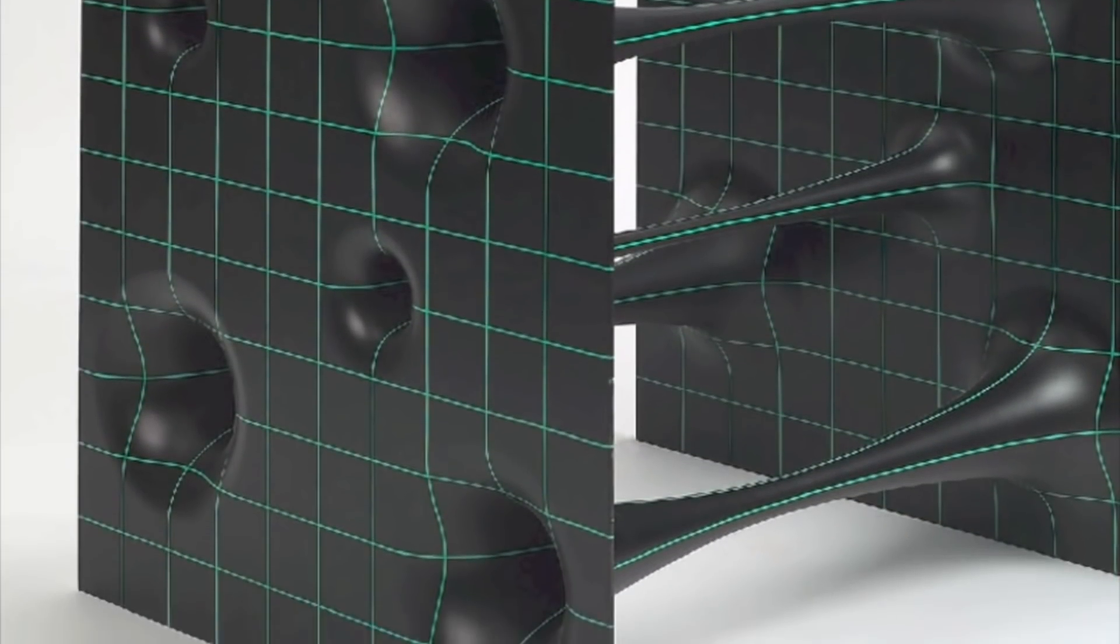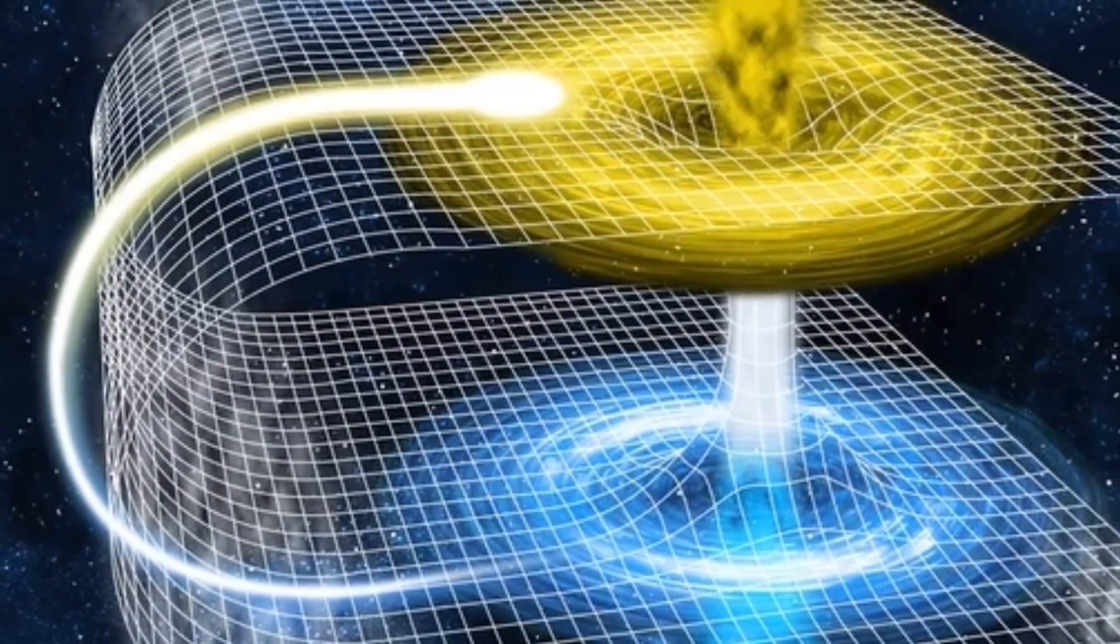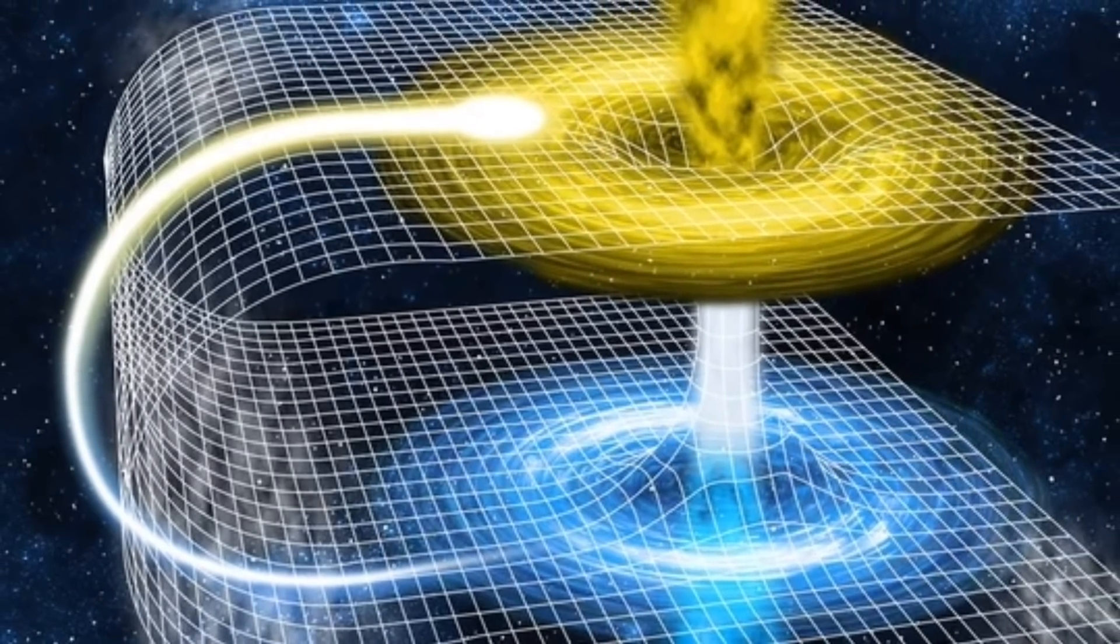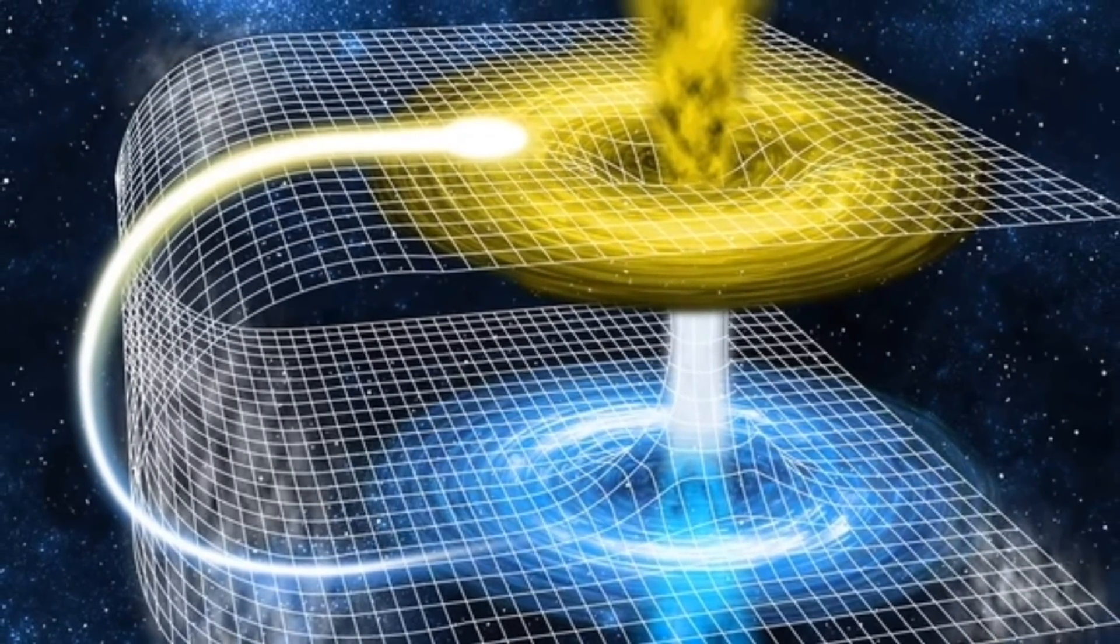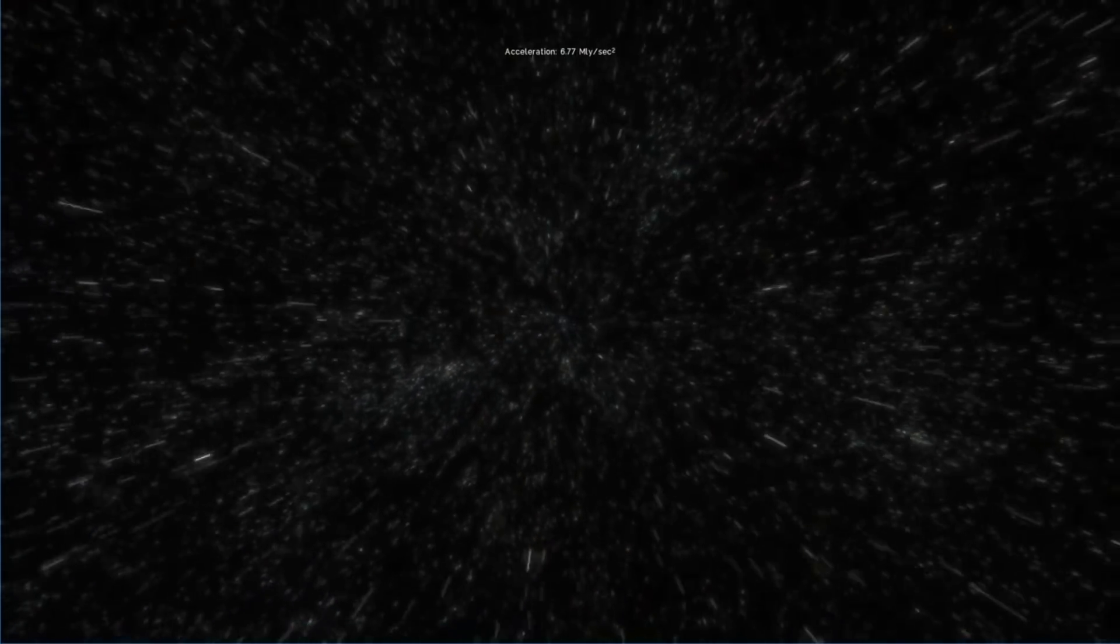For example, wormholes are theoretical predictions of general relativity. In a wormhole, two different points in space that are far apart can be connected to each other. What if the edges of space are all connected together in a similar way? We have no idea.